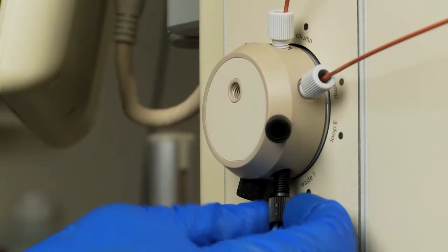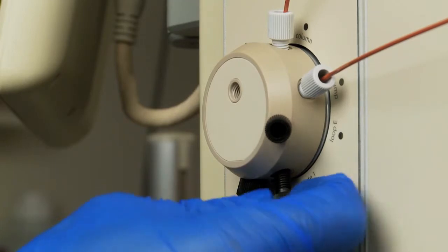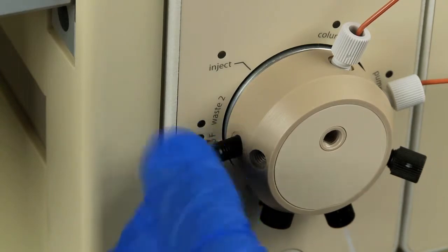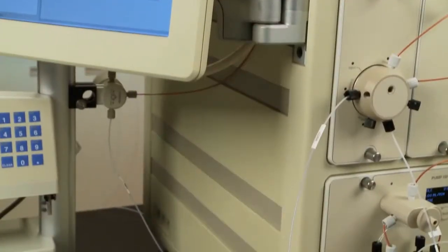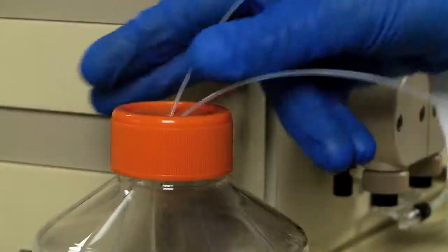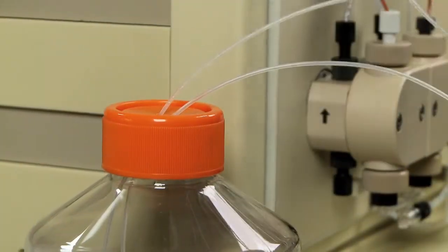Now you will make tubing connections to the inject valve. Connect the waste lines to waste ports 1 and 2 on the inject valve and place the ends into the waste container. The waste container should be placed next to or below the NGC. Do not place the waste container on top of the NGC.